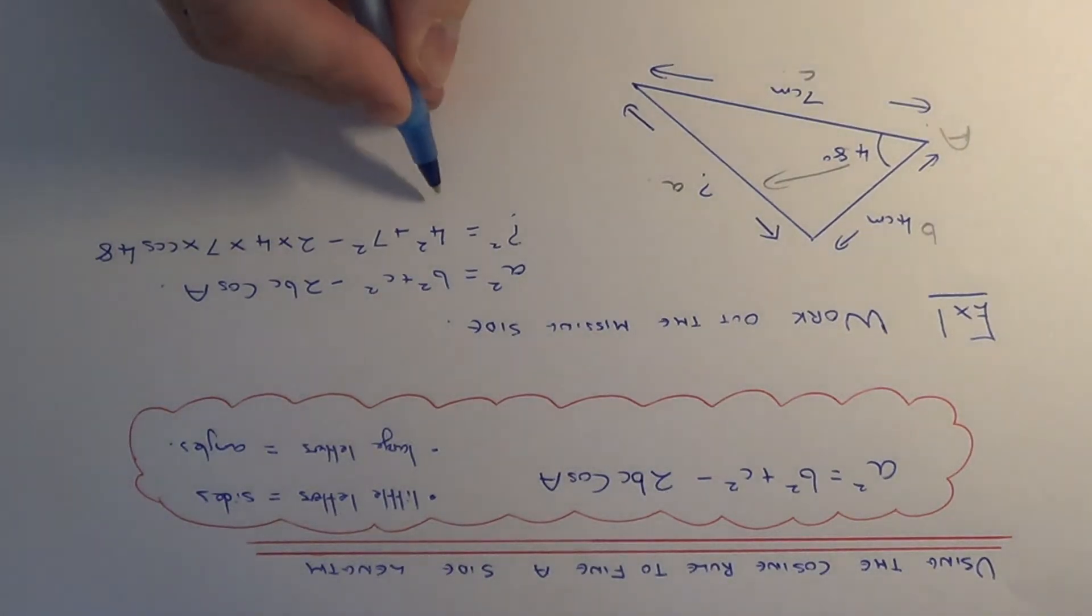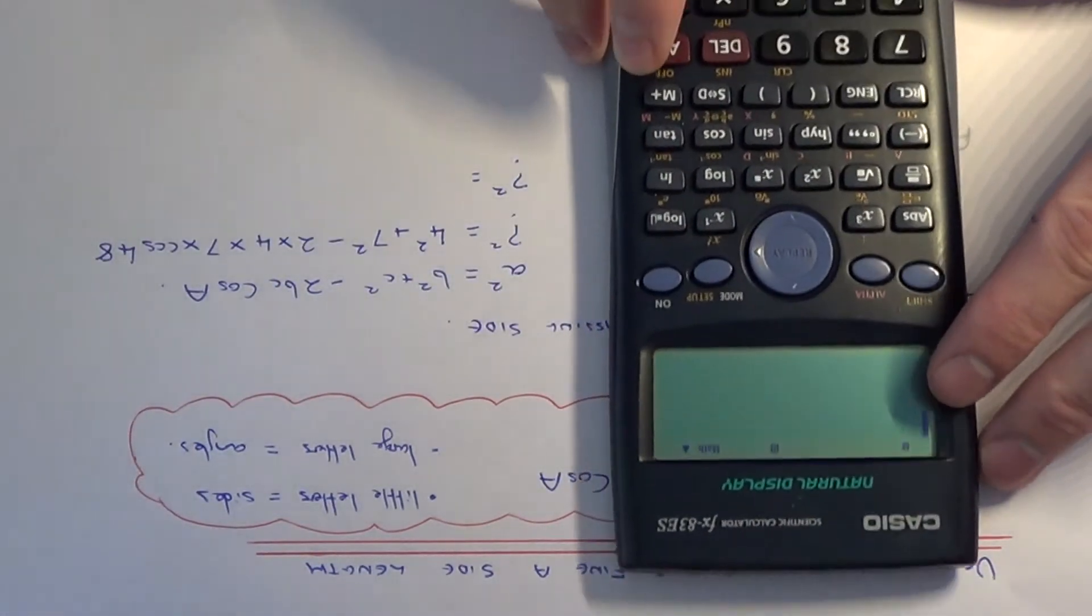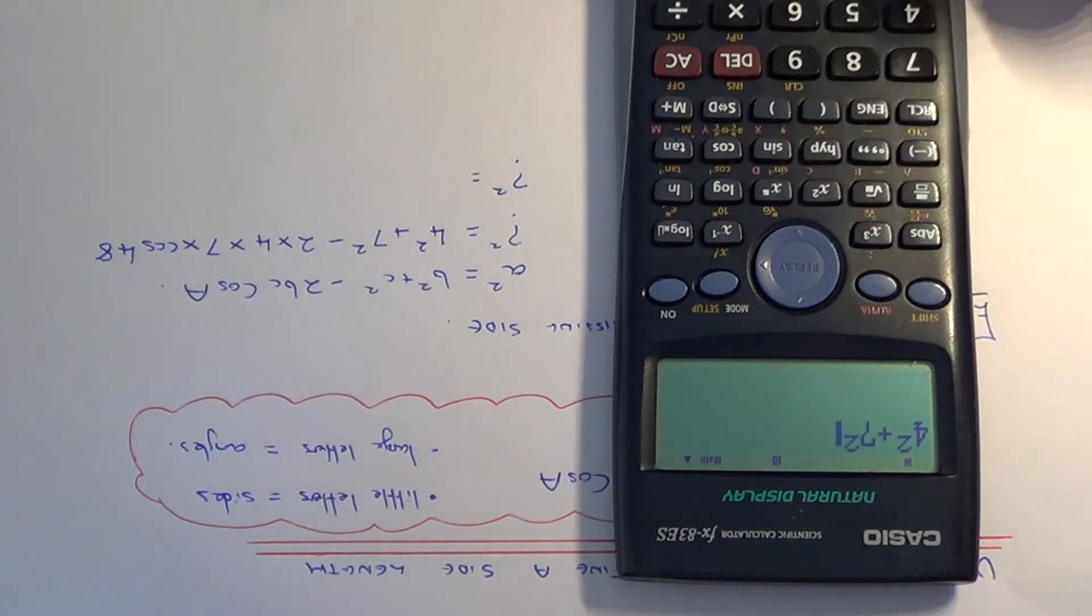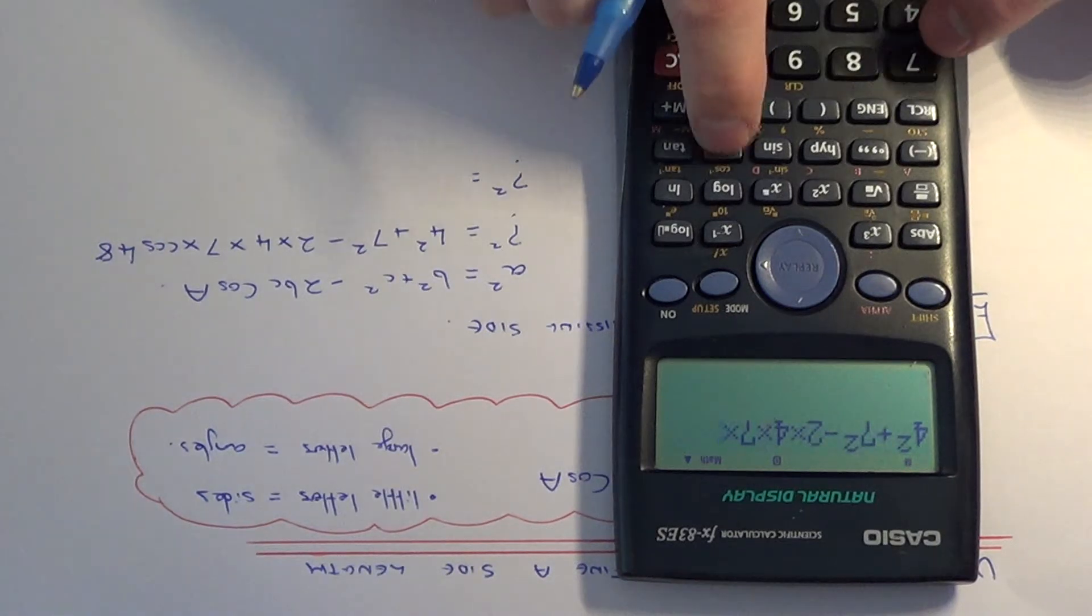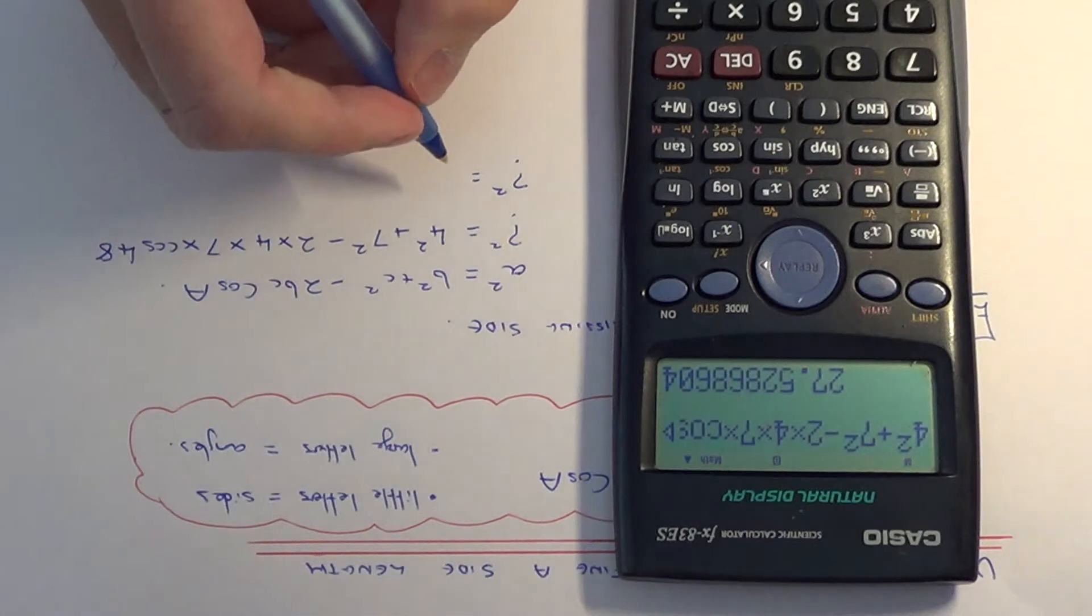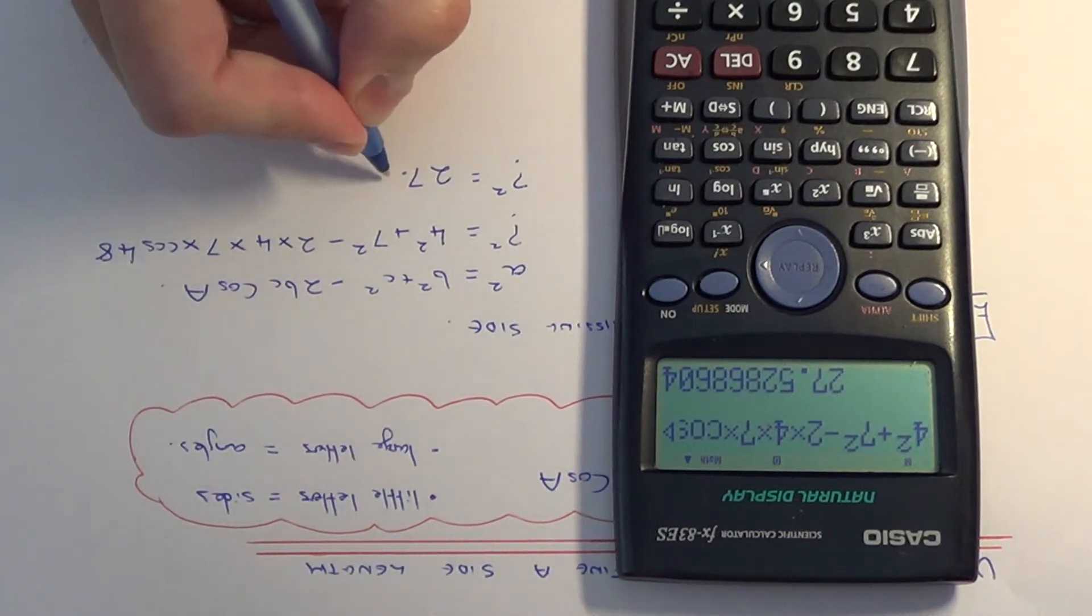If you have a decent calculator you should be able to type all this in. So we've got 4² + 7² - 2 × 4 × 7 × cos 48. This gives an answer of 27.5.